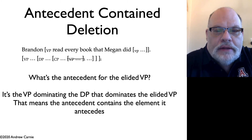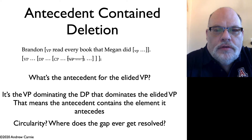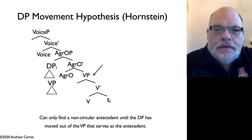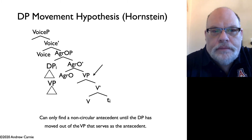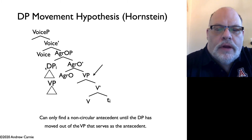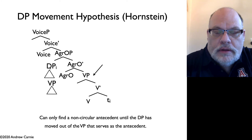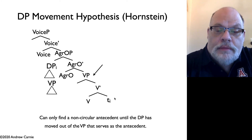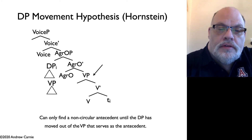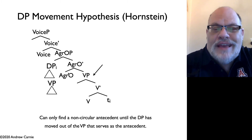Let us turn to two possible solutions that have been proposed in the literature. The first hypothesis was proposed by the linguist Norbert Hornstein. He proposed that the DP that is inside the verb phrase moves to the specifier of AgrO. This is a movement we have already motivated — we've already claimed that DPs move from this position to the AgrO position to take accusative case.